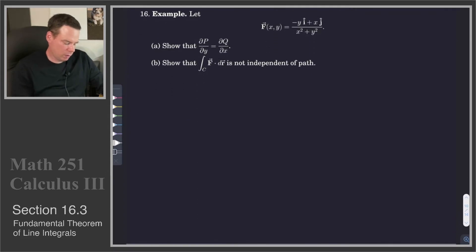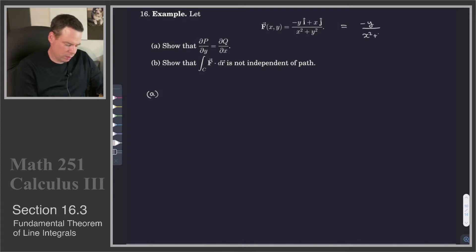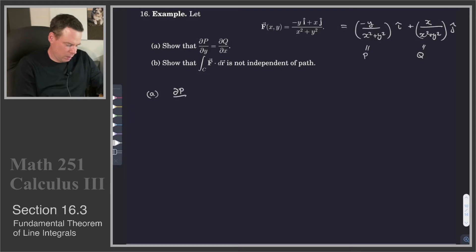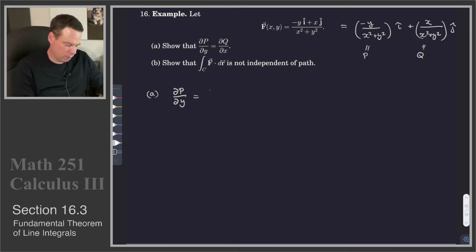In this example we've got our vector field given, and we want to show that ∂P/∂y equals ∂Q/∂x. Let's write down what P and Q are so we can see them. There's our function P, and our function Q is x/(x²+y²). So what is ∂P/∂y? We're differentiating P with respect to y — that's a quotient rule: derivative of the top, which is -1, times the bottom minus the top times the derivative of the bottom, all over the bottom squared.